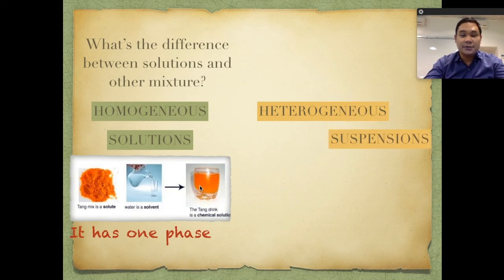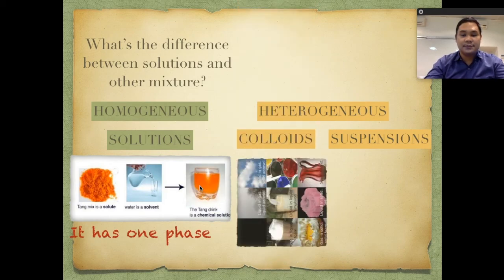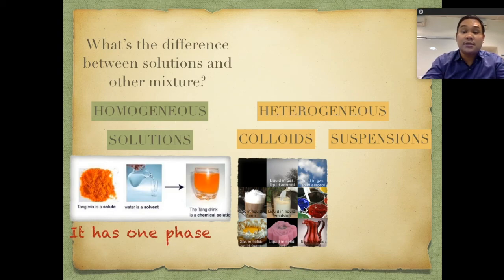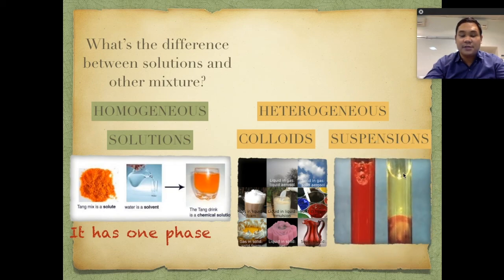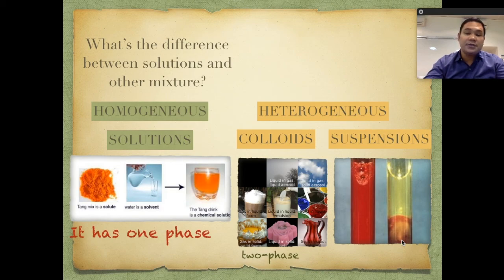For heterogeneous mixtures, there are two types: suspension and colloids. Examples of colloids include clouds, ice cream, and gelatin. An example of suspension is blood — if you let blood stand in a test tube for about two hours, the plasma component and the blood component will separate. Therefore, blood is a suspension. For colloids, the mixture is two-phase but particles remain dispersed; for suspension, it is two-phase but particles settle at the bottom.